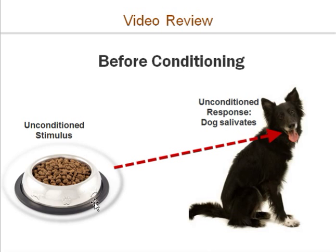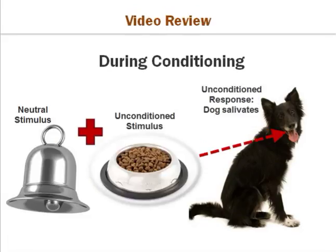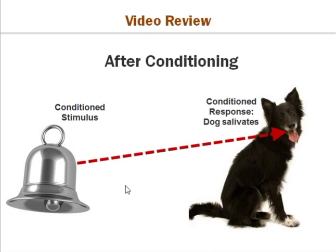Before conditioning, the unconditioned stimulus is food, and naturally the dog's response is to salivate at the sight of food. During conditioning, the bell — the neutral stimulus — is paired with the unconditioned stimulus, still eliciting that salivating response. Once you pair these over time, just the sight of the neutral stimulus by itself produces the salivating response even without the food. At that point, the neutral stimulus becomes the conditioned stimulus, and the unconditioned response becomes a conditioned response to that bell.